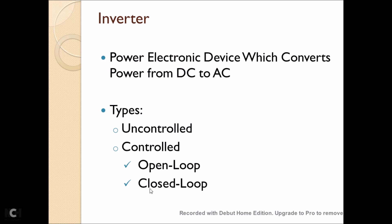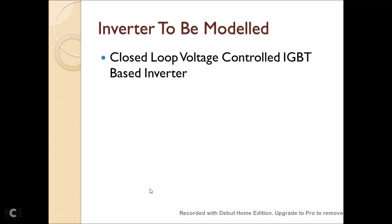An inverter is a power electronic device which converts power from DC to AC. There are two types: uncontrolled and controlled. In controlled inverters, we have open-loop and closed-loop control systems. In this session, I will be simulating a three-phase inverter with a closed-loop voltage control system.